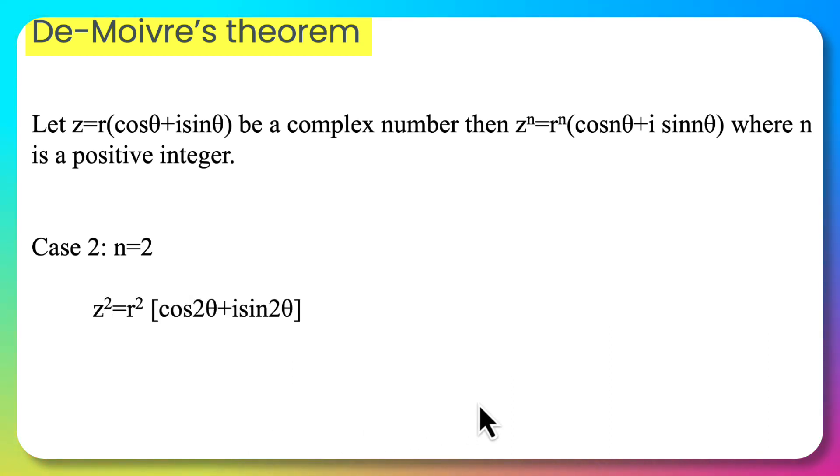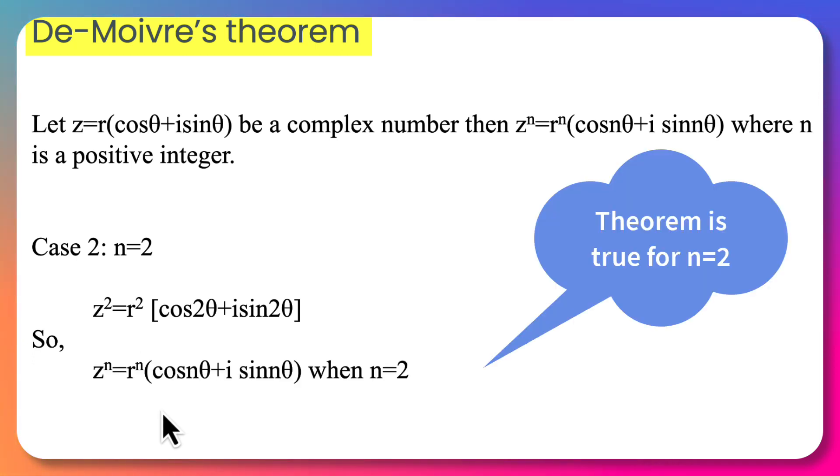Now we start case 2, in which z^2 = r^2(cos 2θ + i sin 2θ). This we have already proved in the polar form, so when n equals 2 the theorem holds.